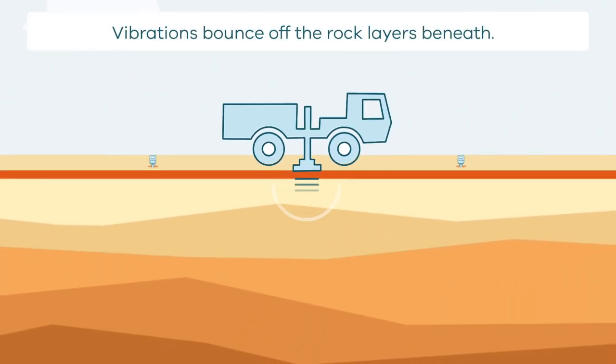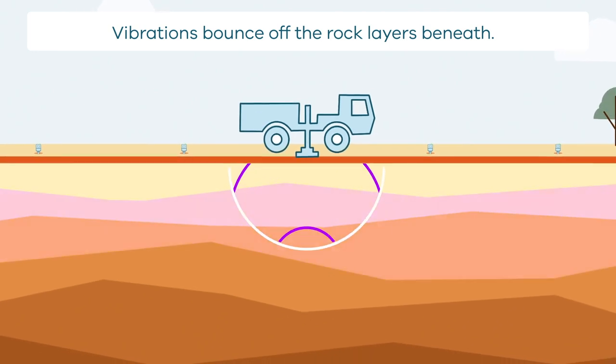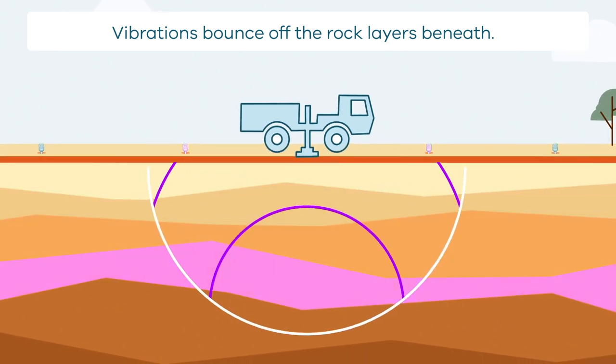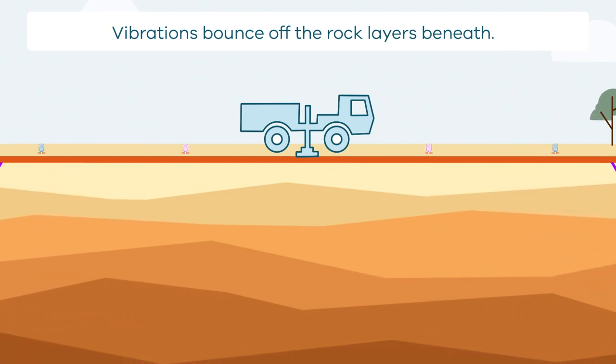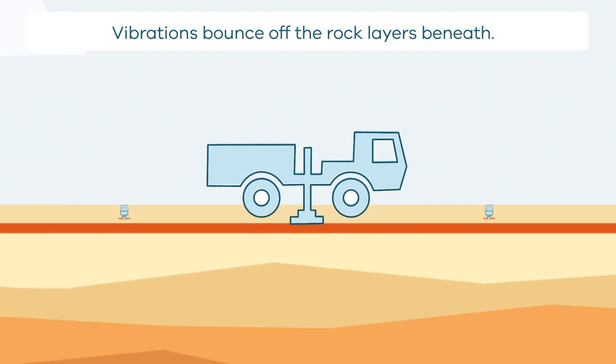The trucks hit the ground and make movement through the ground they call vibrations. Vibrations mean when the ground moves around through the rock underneath.